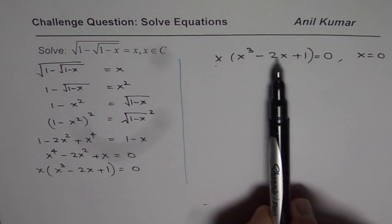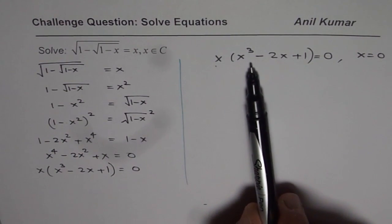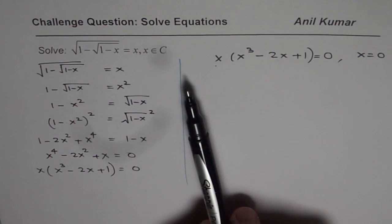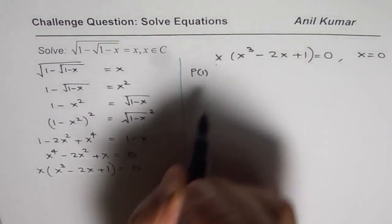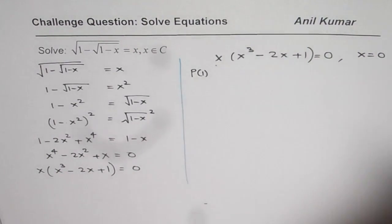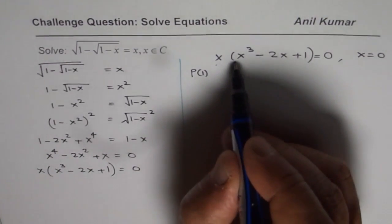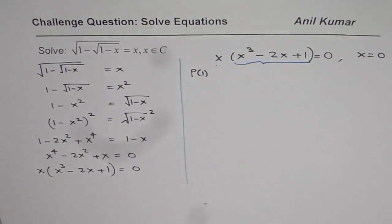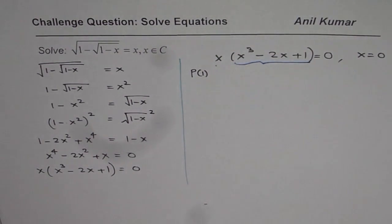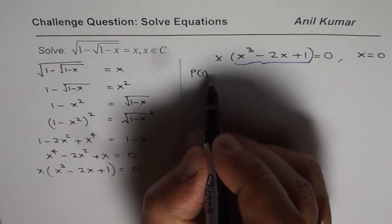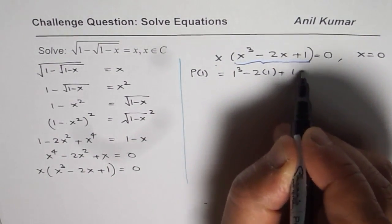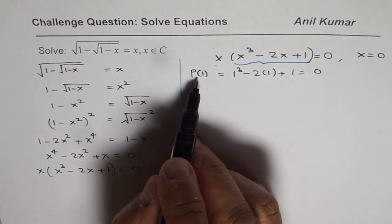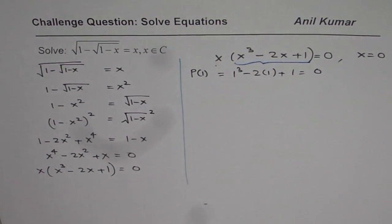Now to find other solution we can apply the remainder theorem. We have a cubic equation here. Now let us try the terms. You will see that P of 1, if I substitute 1 in this equation which is x cube minus 2x plus 1, I get 1 cube minus 2 times 1 plus 1 which is 0. That means x minus 1 is a factor. So we know one of the factors is x minus 1.